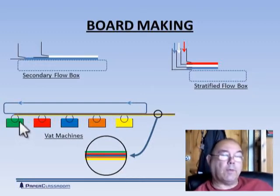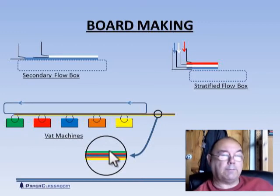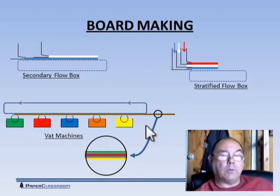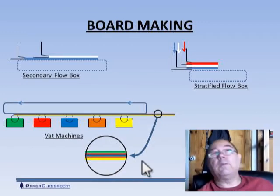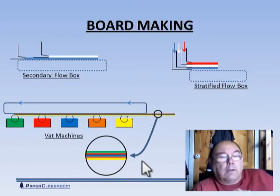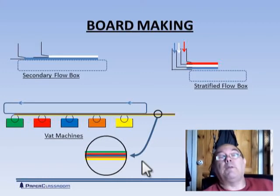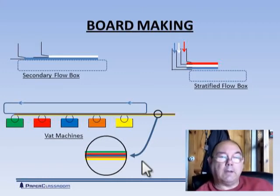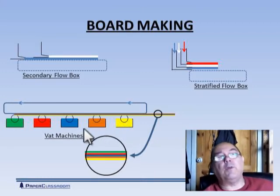So the green fiber was the first one that was in contact with the felt itself. The yellow layer was the last one. And some of these board machines that produce board in this way using VATs use nine, maybe more different furnishes.